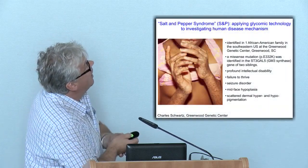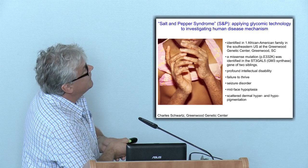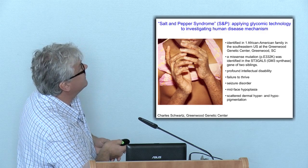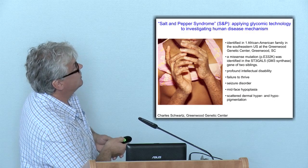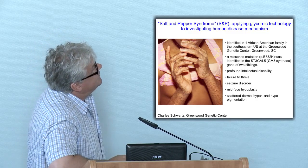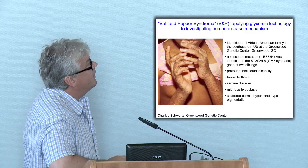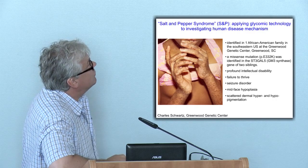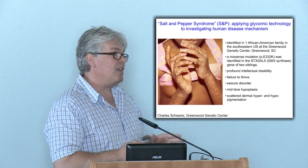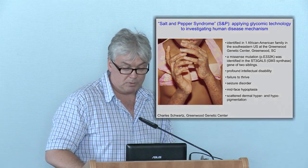The first case I'm going to talk about is called salt and pepper syndrome. It's due to a mutation in the ST3-Gal5 gene — GM3 synthase — identified in one African-American family and some of the Amish community in the US. There's a missense mutation E332K resulting in profound intellectual disability, failure to thrive, seizures, and mid-phase hyperplasia. Charles Schwartz provided us with fibroblasts from these patients that we reprogrammed. We wanted to understand the molecular basis of salt and pepper syndrome and develop therapies from that information.